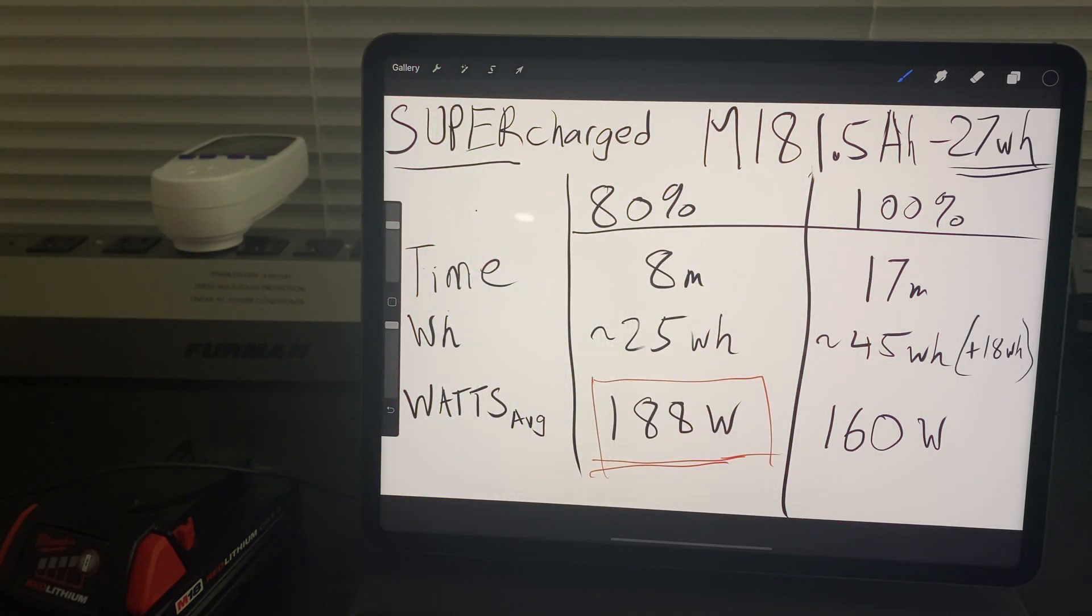So we looked at the supercharger on the 1.5 amp hour battery which is a 27 watt hour battery. At the 80 percent charge mark which is marked by the green light blinking we had used up 25 watt hours at the eight minute mark. So that's an average of 188 watts and keep in mind that this is 188 watts from the wall. What went to the battery was probably a little bit lower, probably about 85 to 90 percent. It is 90 percent from my experience but even that seems relatively high.